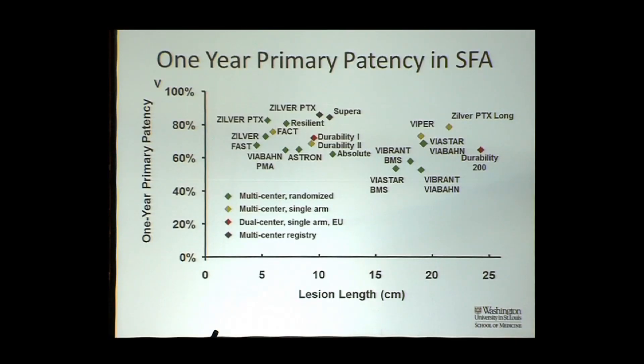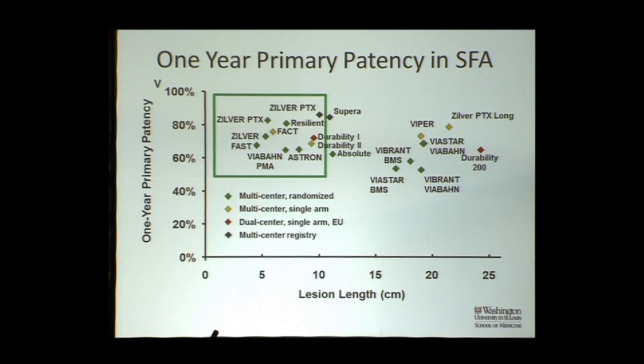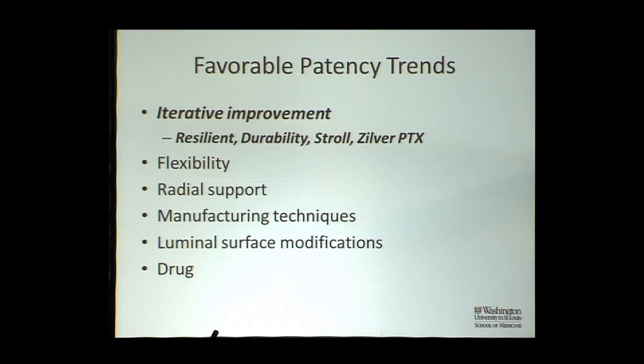This is a slide I still like to use — I keep adding little dots each year, and it helps tell a story of how the industry is coming along. In the green box on the far left are the approval studies: short lesions, just trying to get products on the market and prove modest safety and efficacy for primarily stenotic SFA lesions. There have been favorable patency trends. Looking back at the old Vibrant study and coming forward to modern day, it's very clear that patencies in both covered stents and bare metal stents have really stepped up over time.